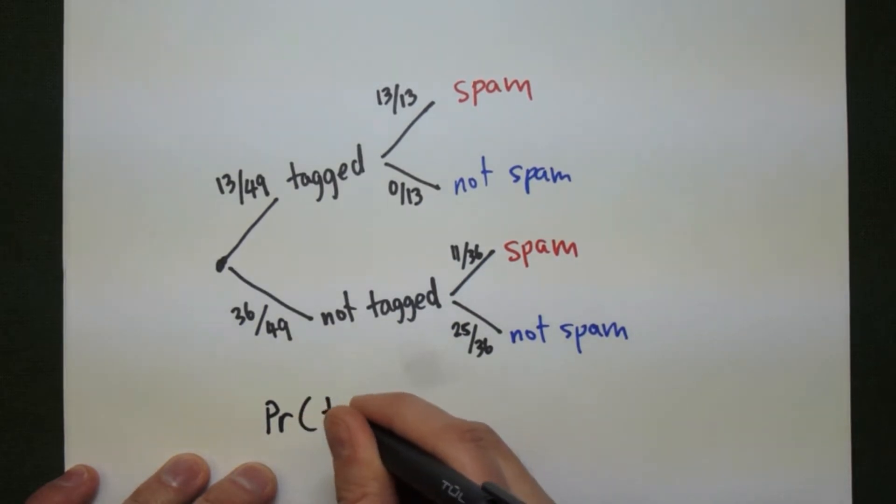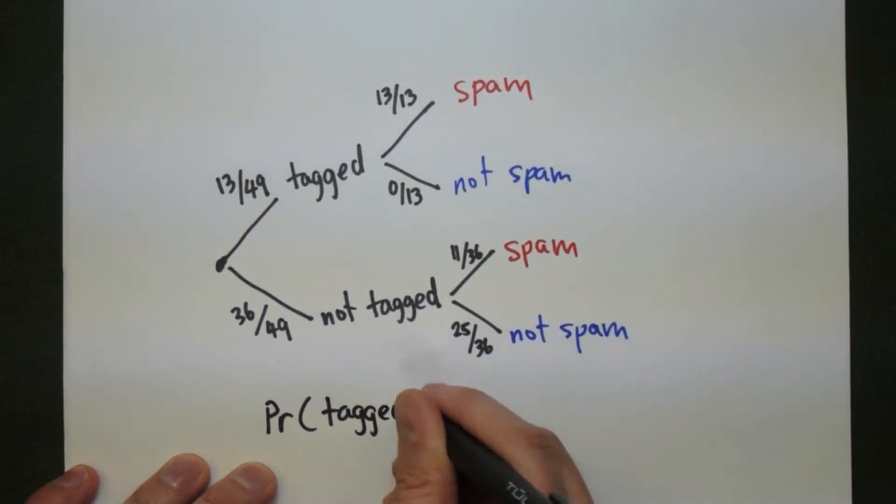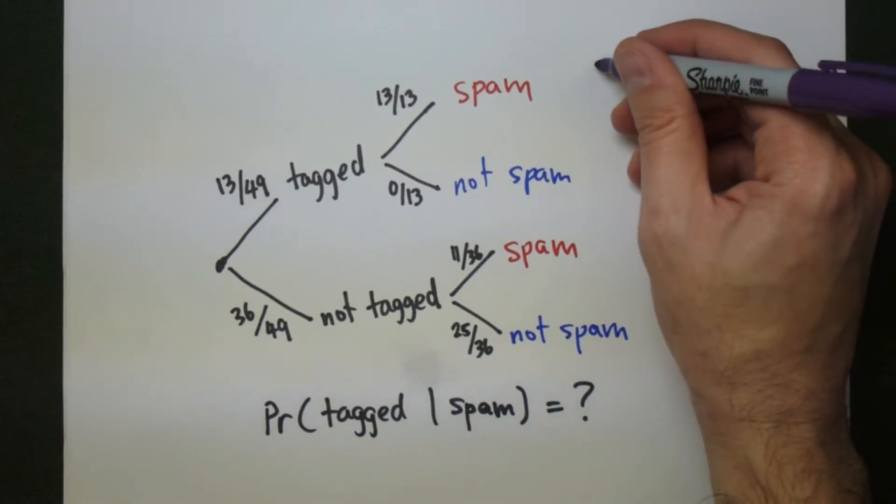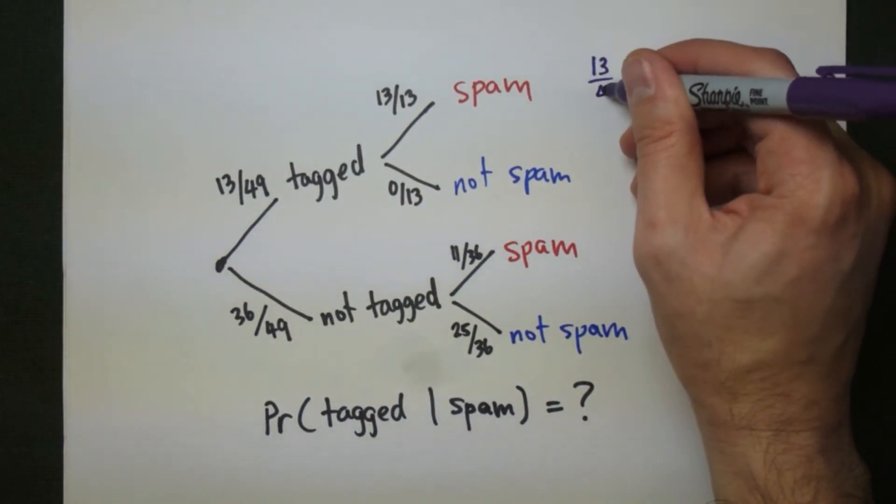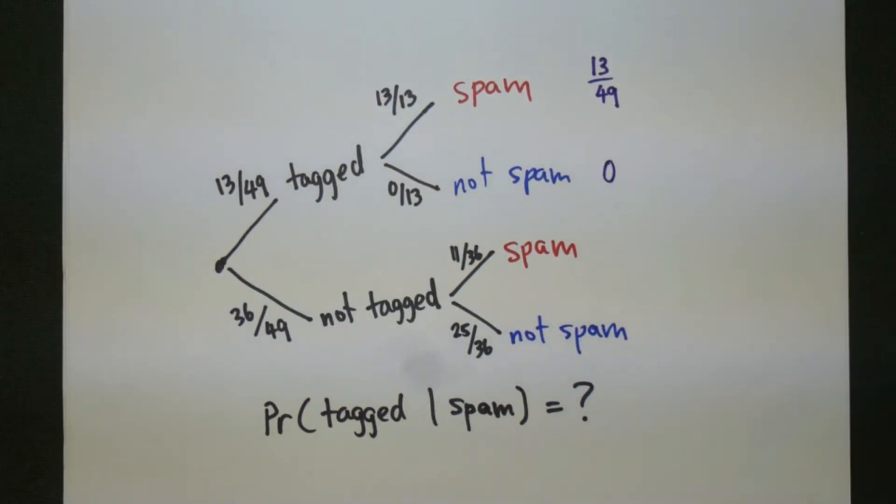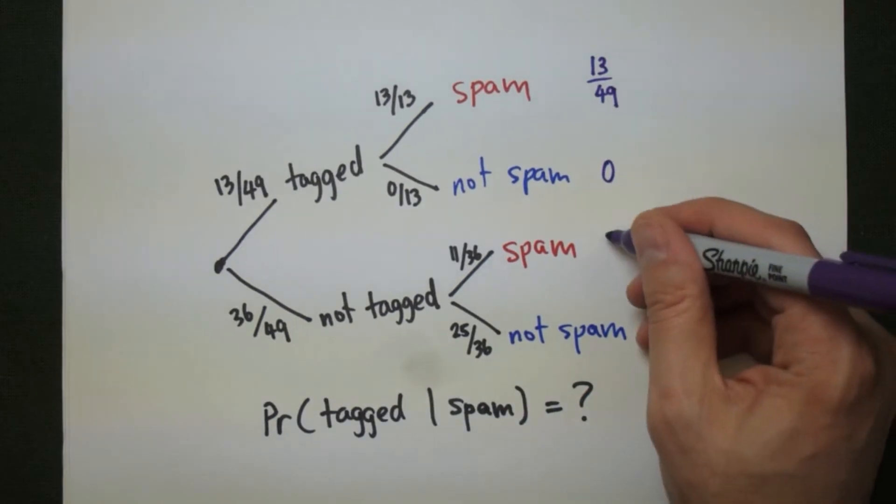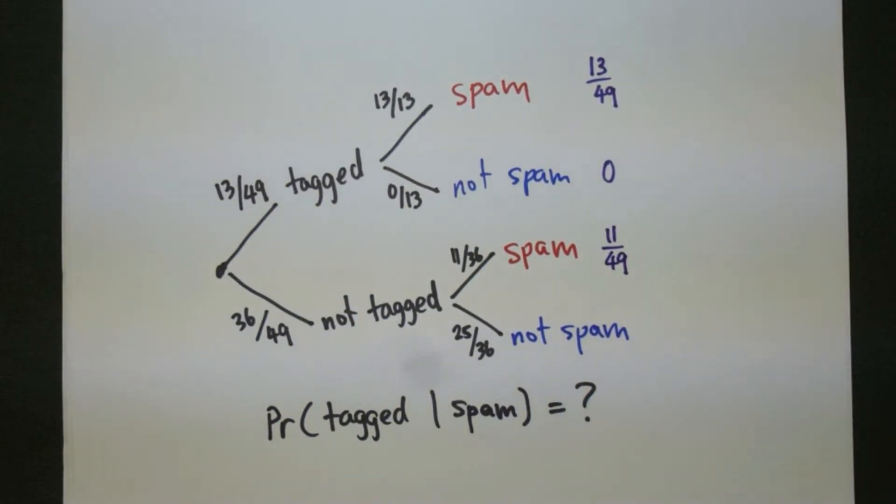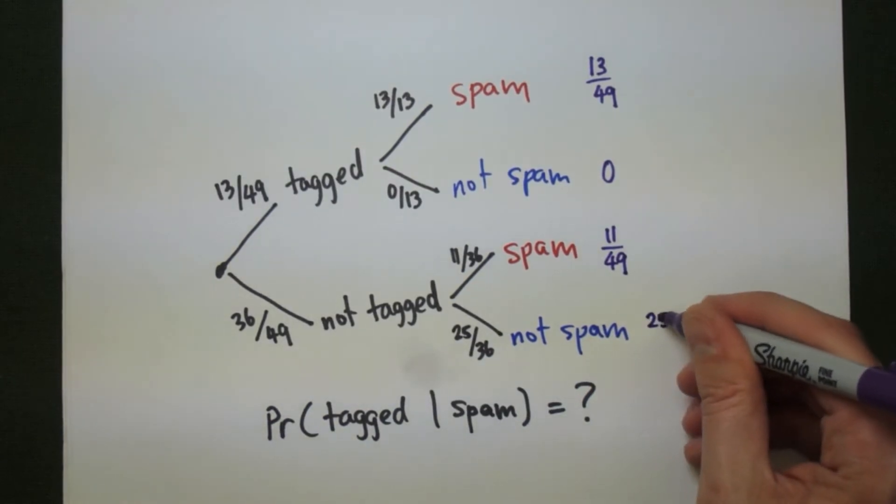We would like to find out what is the probability that a message was tagged given that it was spam. This is the opposite of what the table itself tells us. The tree will allow us to say what the probability something is spam given it was tagged was, but not the other way around. So we look at each of the branches, and we look at the probability we end up at any of the branches, and that's just multiplying down the branches.